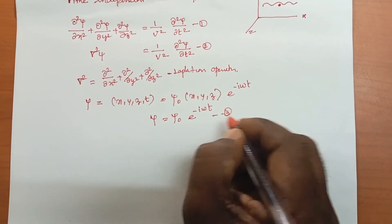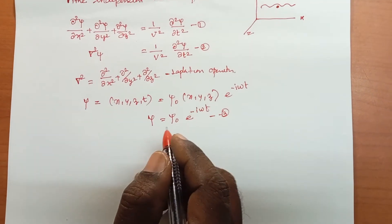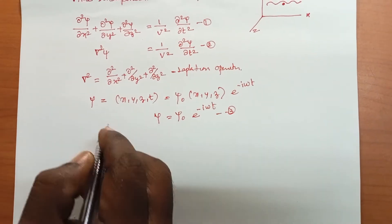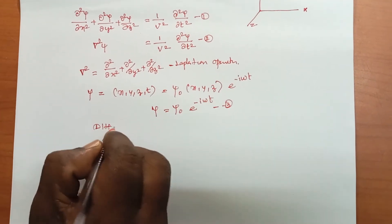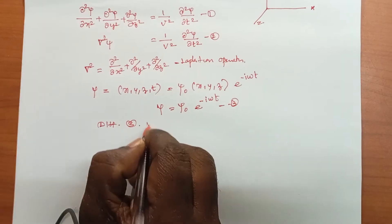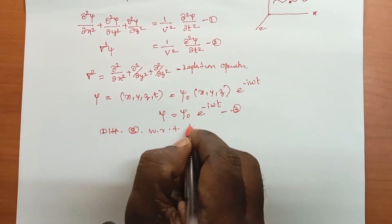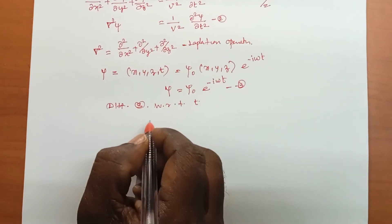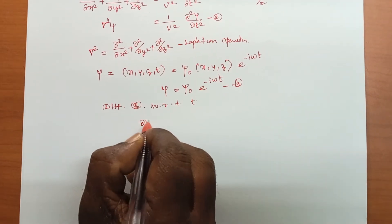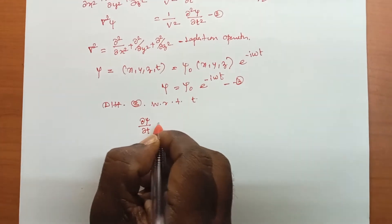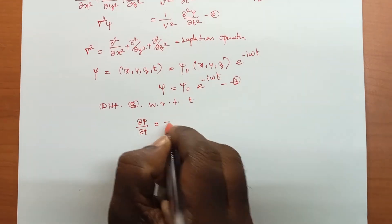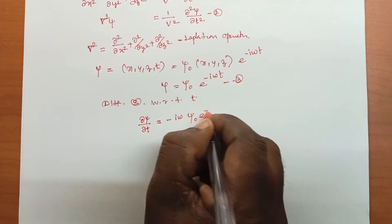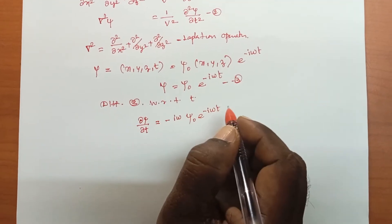Omega is the angular frequency. Differentiating equation 3 with respect to t: ∂ψ/∂t = −iω · ψ₀ · e^(−iωt).